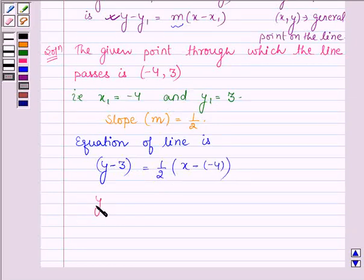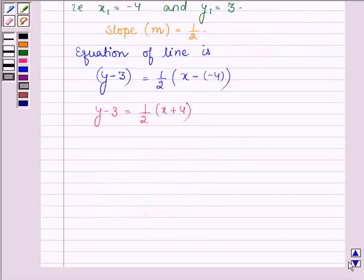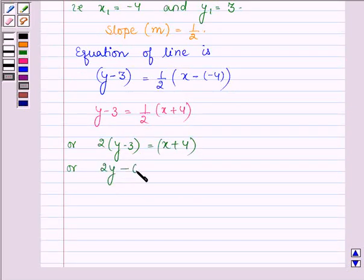Therefore we have y minus 3 equals 1/2 into (x plus 4). This can further be written as 2 times (y minus 3) equals (x plus 4), or 2y minus 6 minus x minus 4 equals 0, or 2y minus x minus 10 equals 0.